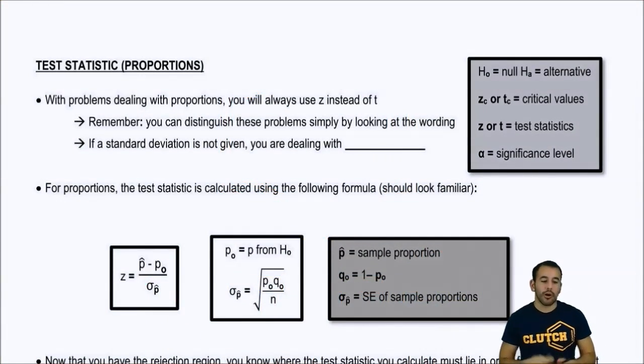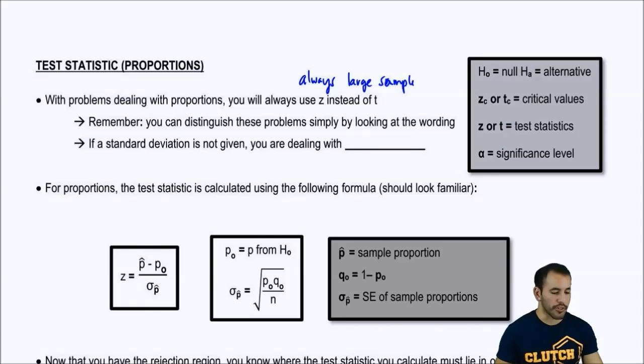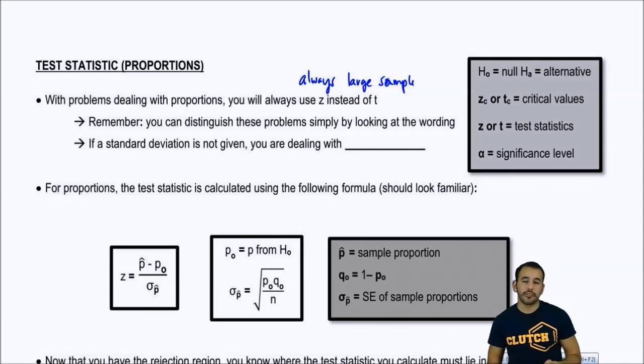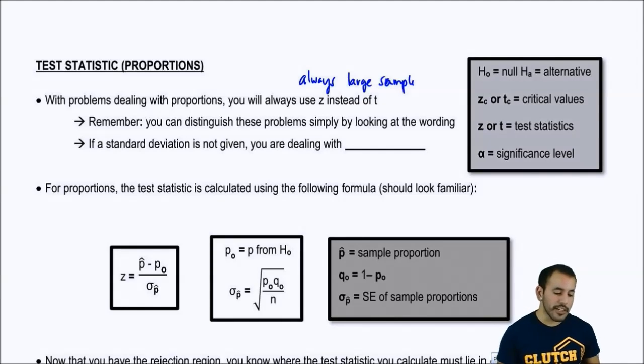When dealing with problems with proportions, you always use z instead of t. So, you're always going to have a large sample, which remember that is just n is greater than or equal to 30, right? And so, you can distinguish these problems by looking at the wording. If you're having a hard time, I don't know if this is a large mean or a large proportion, what you can basically do is just look if standard deviation is mentioned at all. So, if a standard deviation is not given, you're dealing with proportions.